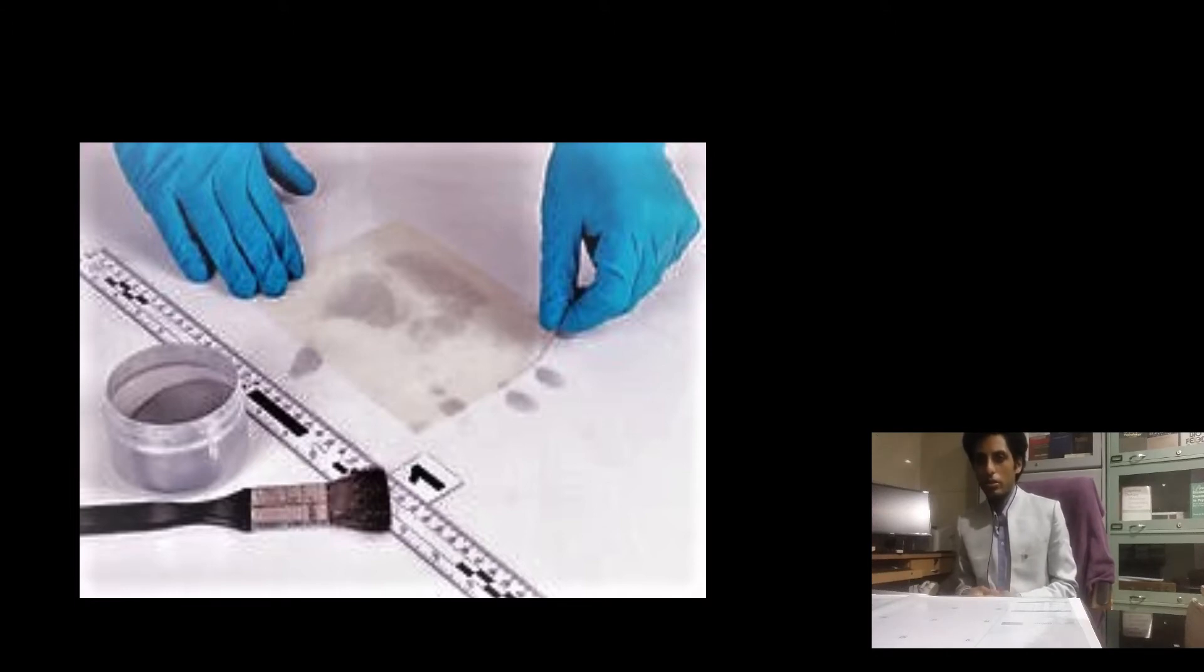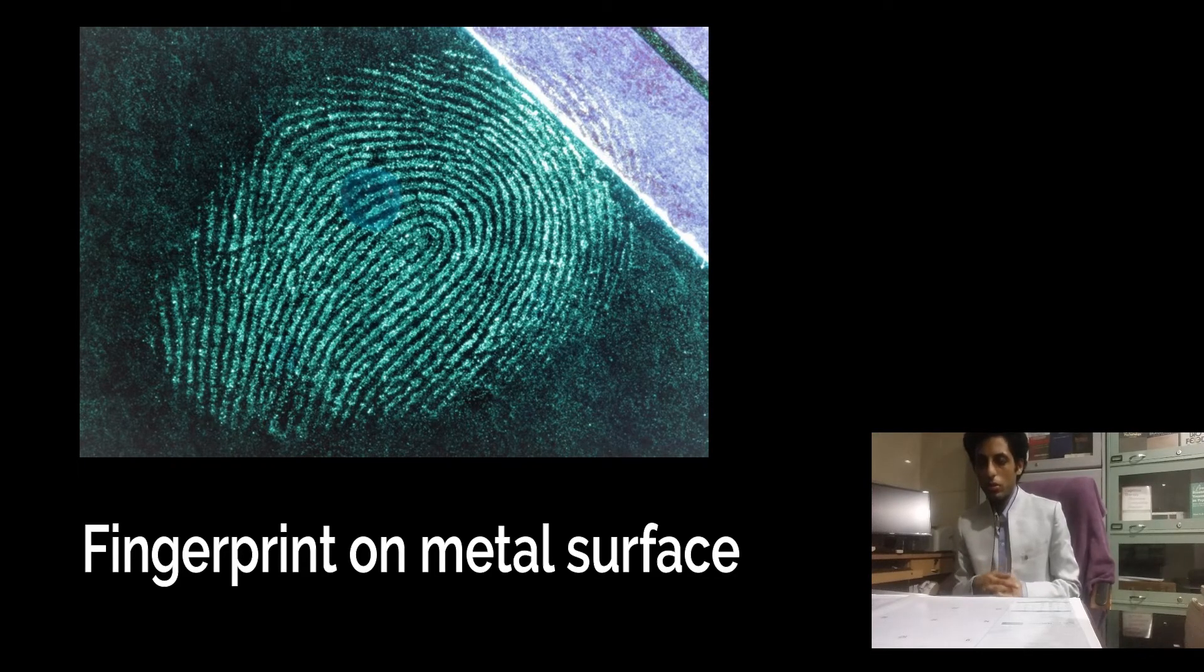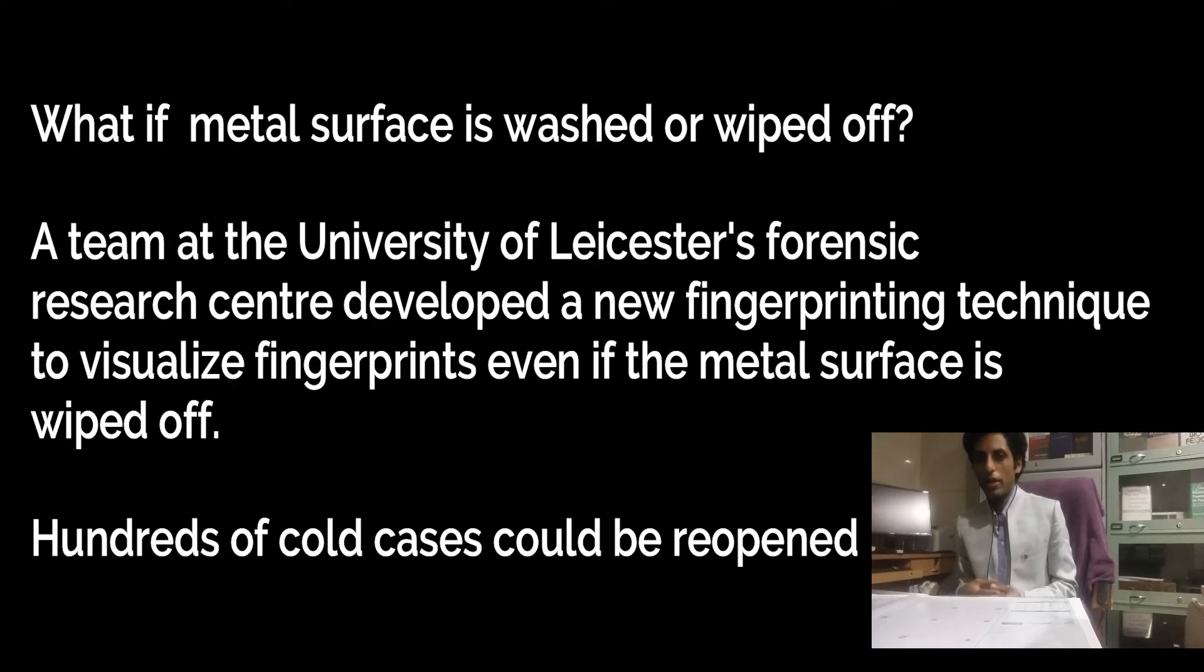When a finger touches metal, there comes the contact and it leaves a trace evidence of fingerprint. The test method requires a magnifying glass and chemical analysis. The normal question here arises is: what if the metal surface is washed or wiped off? What about the fingerprint? Does it go away?